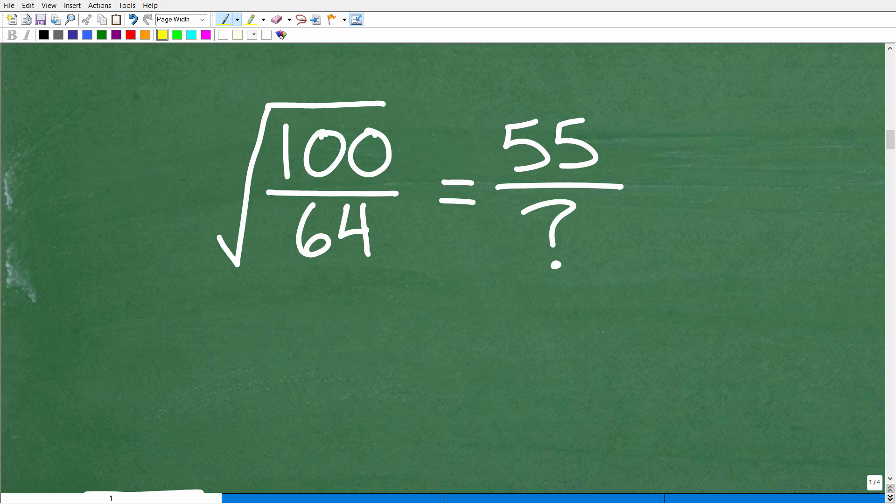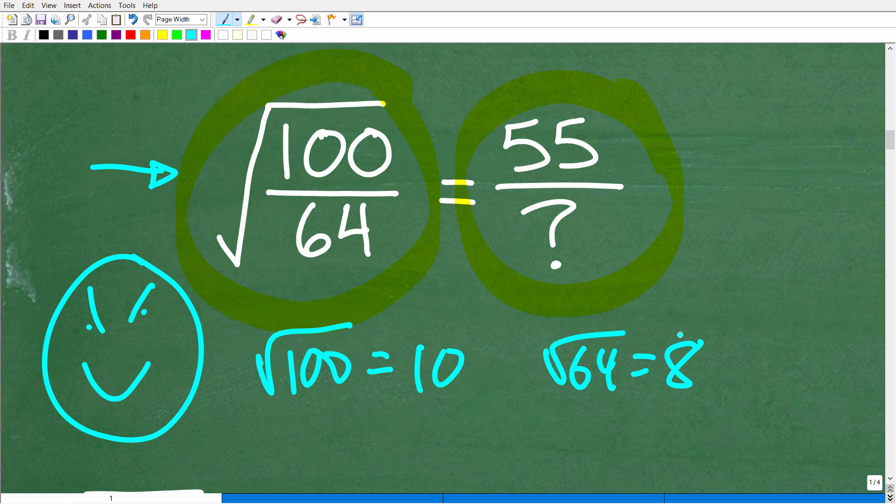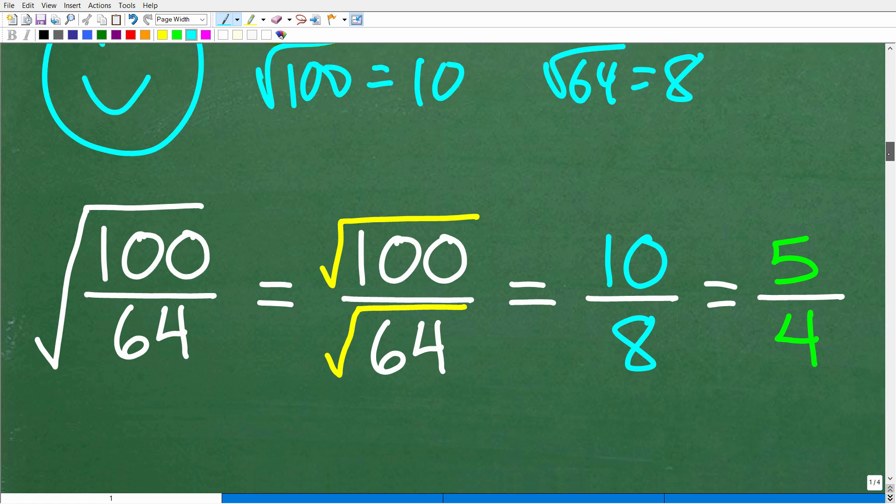Okay, now here is our problem. And there's a couple different things going on here. So we have this square root, square root of 100 over 64. And it's equal to this fraction. So the first thing that we want to address is this square root situation. Because, hey, maybe we can make this problem simpler. So we look at these numbers in this fraction, 100 and 64. You might be saying, hey, Mr. YouTube math man, I'm really good with square roots. I know that the square root of 100 is 10 and the square root of 64 is 8.